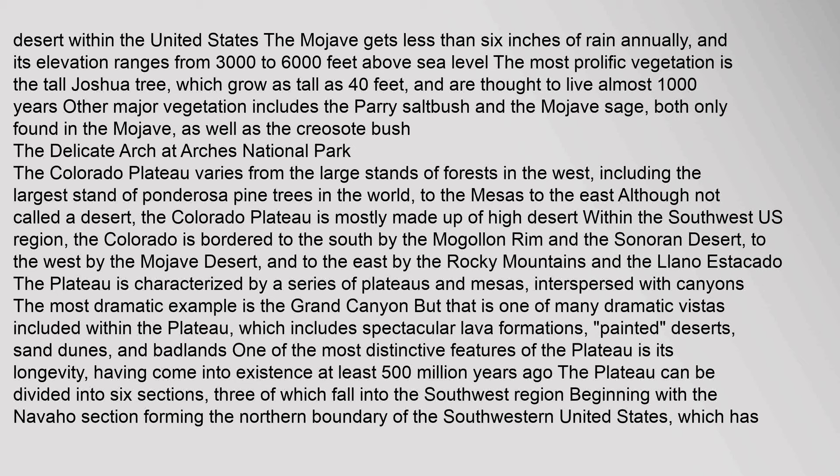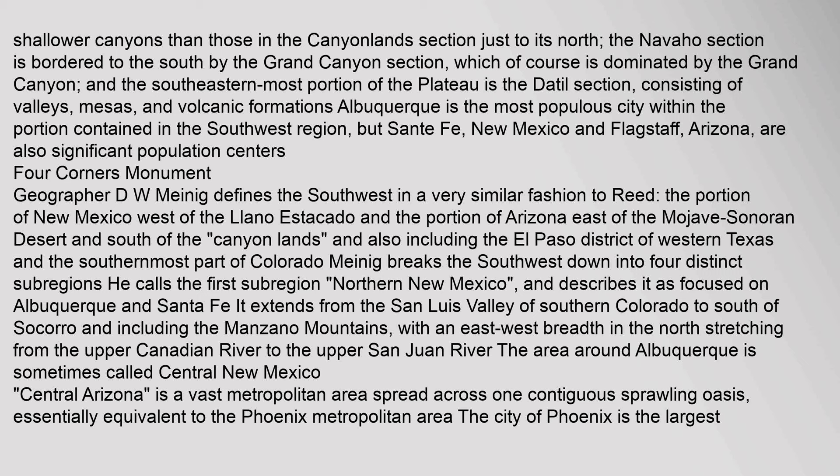One of the most distinctive features of the plateau is its longevity, having come into existence at least 500 million years ago. The plateau can be divided into six sections, three of which fall into the southwest region: beginning with the Navajo section forming the northern boundary of the southwestern United States, which has shallower canyons than those in the Canyonlands section. The Navajo section is bordered to the south by the Grand Canyon section, which is dominated by the Grand Canyon. The southeastern most portion of the plateau is the de Teal section, consisting of valleys, mesas, and volcanic formations. Albuquerque is the most populous city within the portion contained in the southwest region, but Santa Fe, New Mexico, and Flagstaff, Arizona, are also significant population centers.